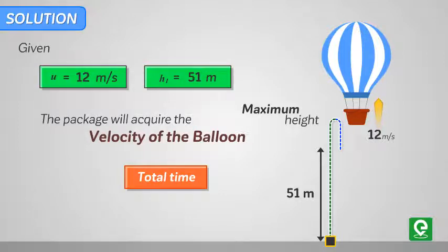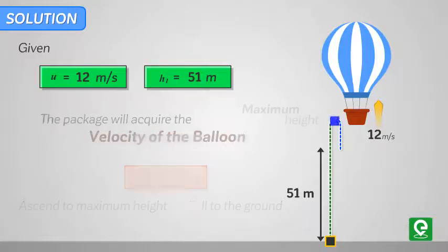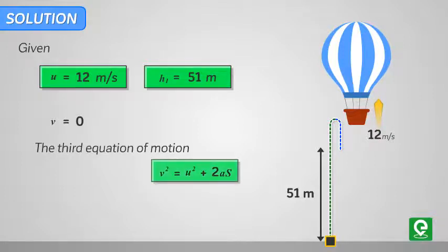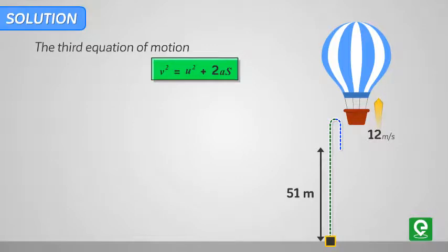The total time needed for the package to reach the ground will include the time it takes for the package to ascend to maximum height and the time it takes the package to fall to the ground. Now at maximum height, the package will have a velocity equal to zero. From the third equation of motion we can write: v² = u² + 2as.